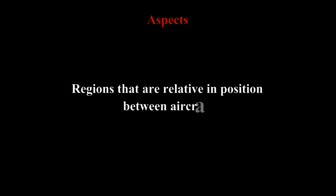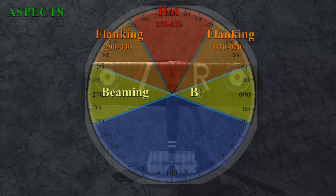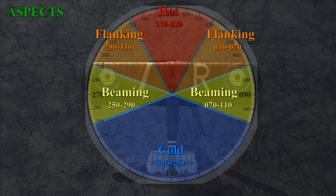Aspects are regions around your aircraft that are considered relative to the position of another aircraft. Looking at this picture, we have four different aspects: hot, flanking, beaming, and cold. Whatever region an enemy aircraft falls into, that is your aspect relative to that enemy aircraft.